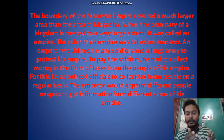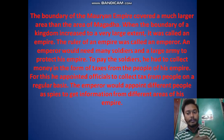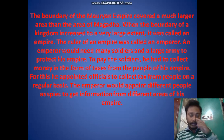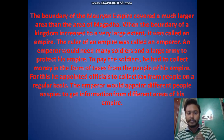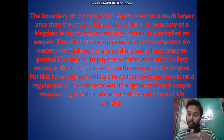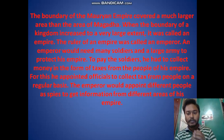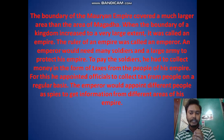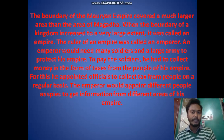The ruler of the empire is called an Emperor, unlike a king who rules a kingdom. An emperor needs many soldiers and a large army to protect his empire. To pay the soldiers, he had to collect taxes from people across his empire. He would appoint officials to collect tax on a regular basis, and he would also send spies to different areas to see what people are doing — because an empire is so big he cannot rule only from his capital city.